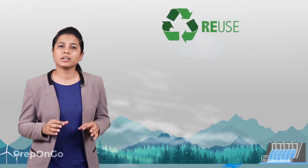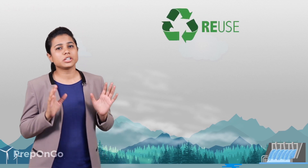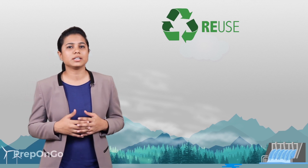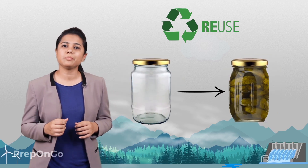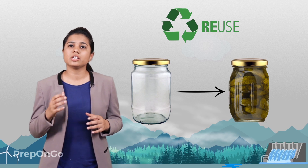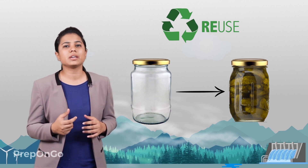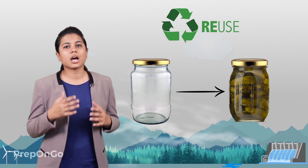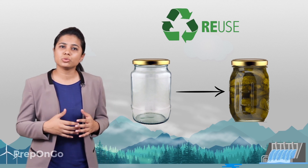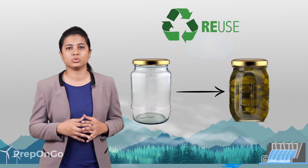The third R is reuse. It means the use of already used articles again and again. For example, the plastic containers in which food items like tea leaves, pickles or sweets are bought can be reused to store other things in the kitchen and household. Usually we buy new improved items even if the one we have can be repaired. For example, we should try to get our mobile phones repaired when required instead of throwing them away and getting new ones.